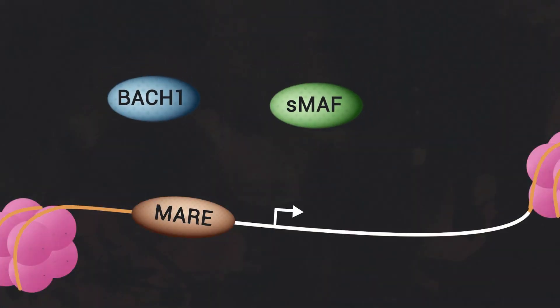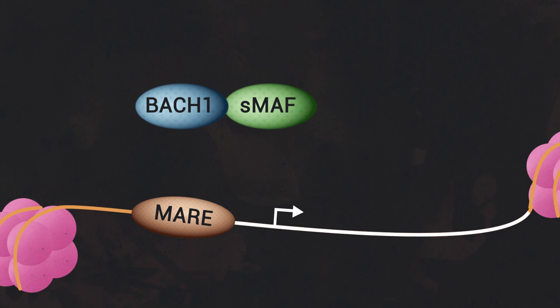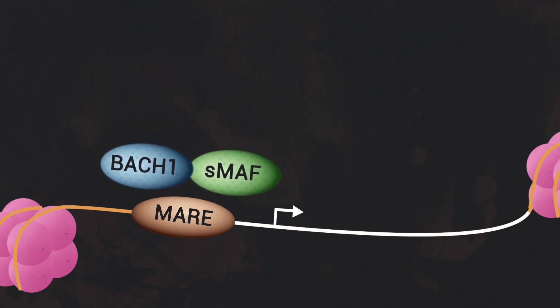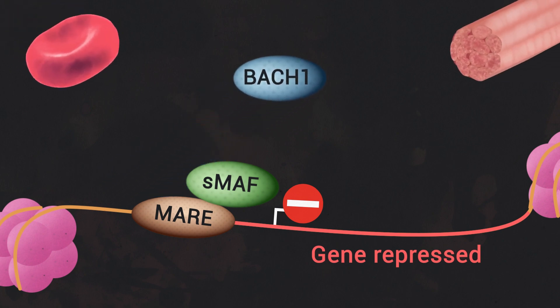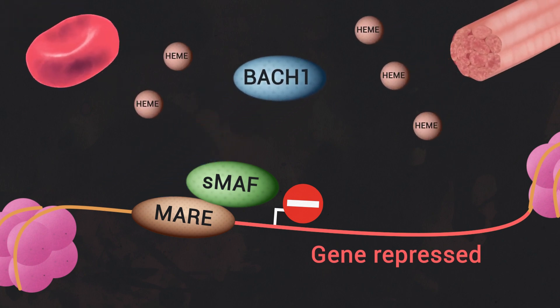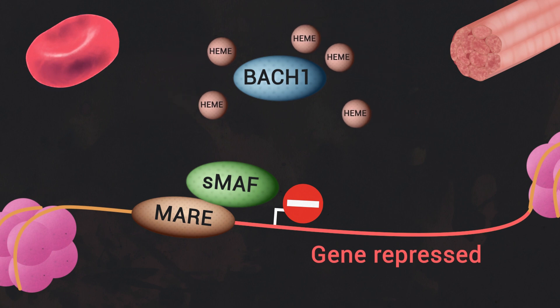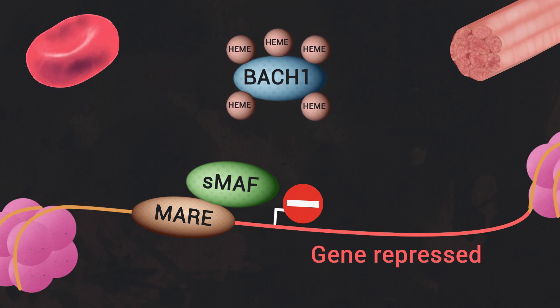Bak1 forms heterodimers with small MATH proteins and binds to the MATH recognition element to act as a transcriptional repressor. In addition, Bak1 possesses a heme-binding region and thus can be directly bound by free heme that is released by many hemoproteins such as hemoglobin and myoglobin.